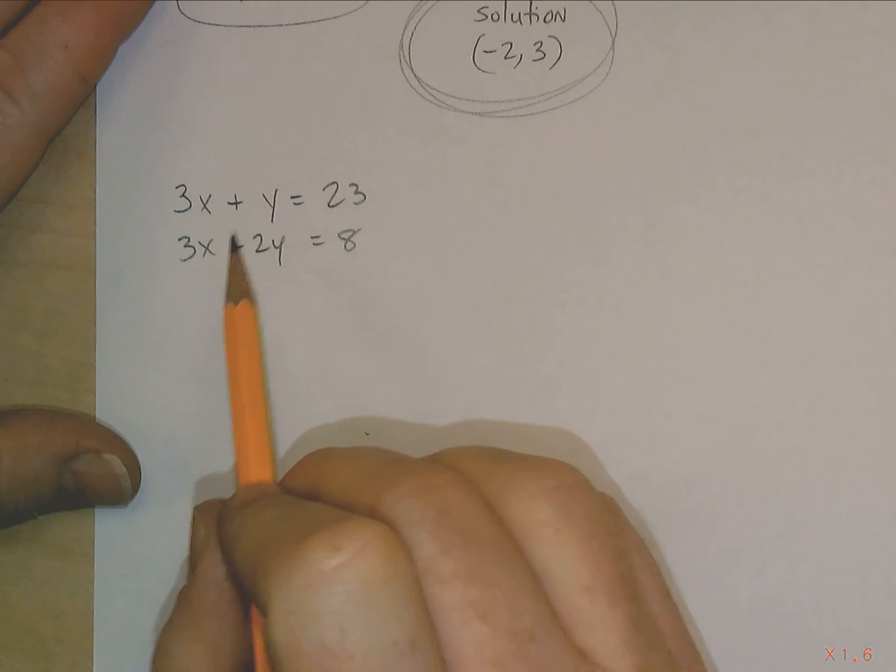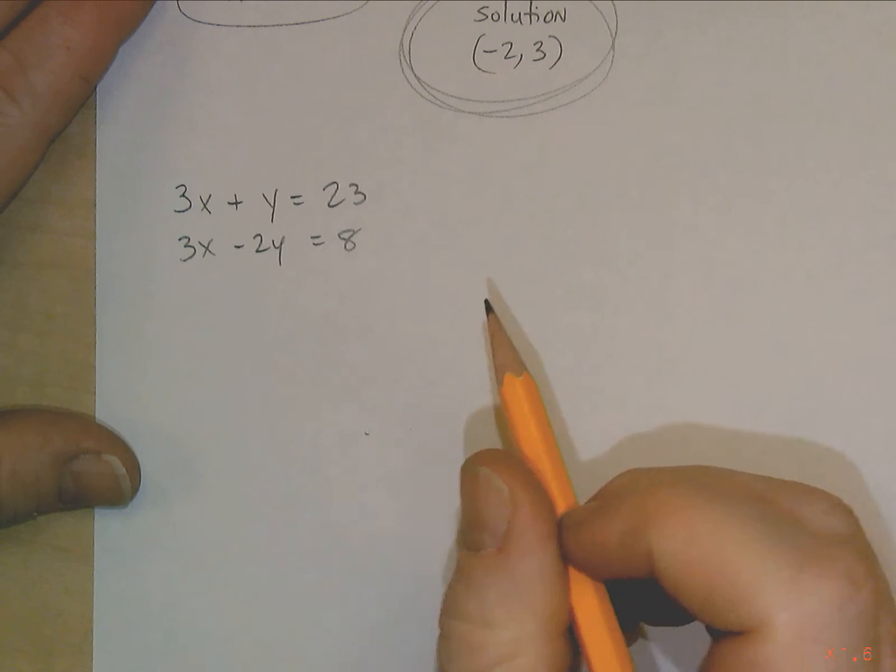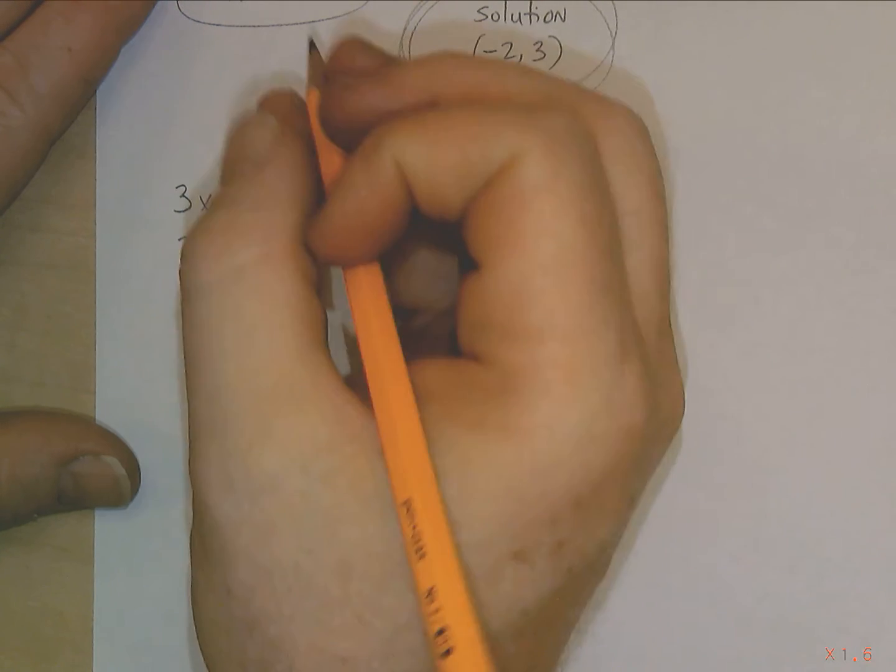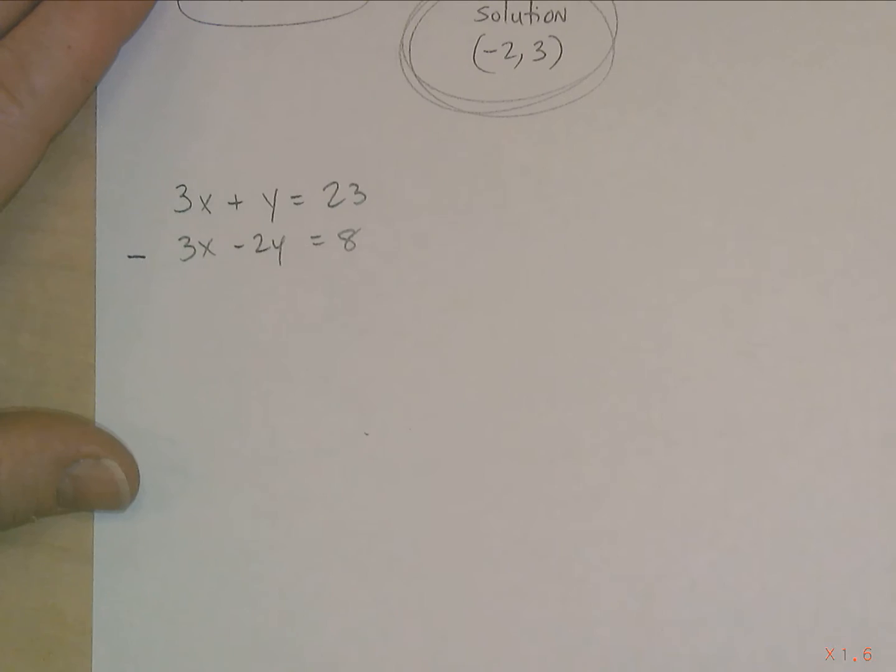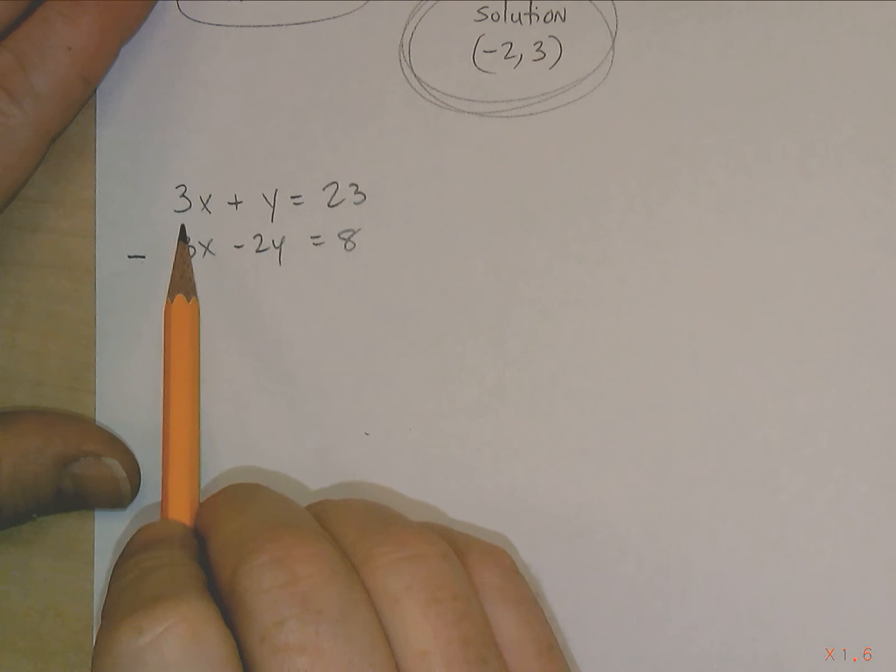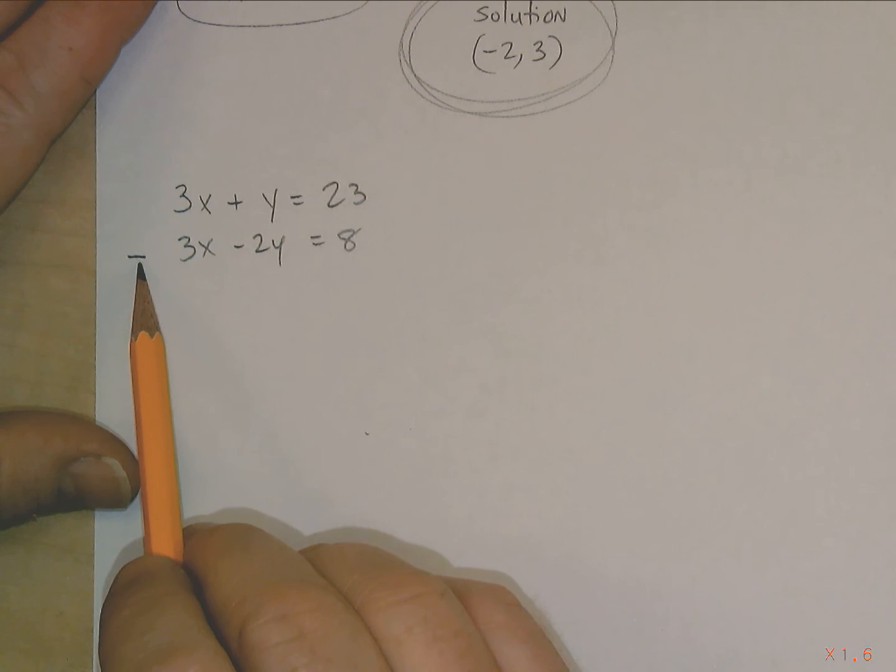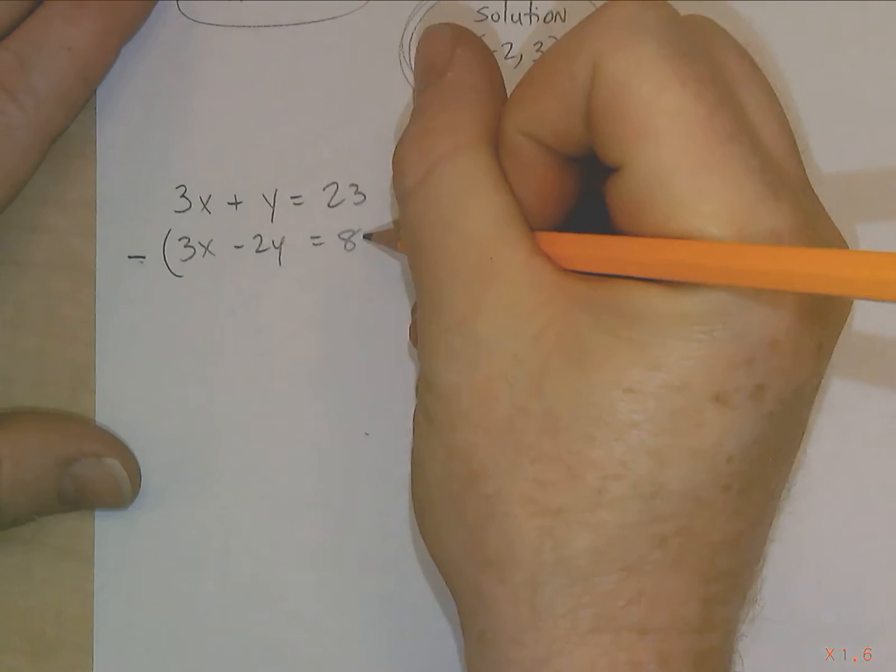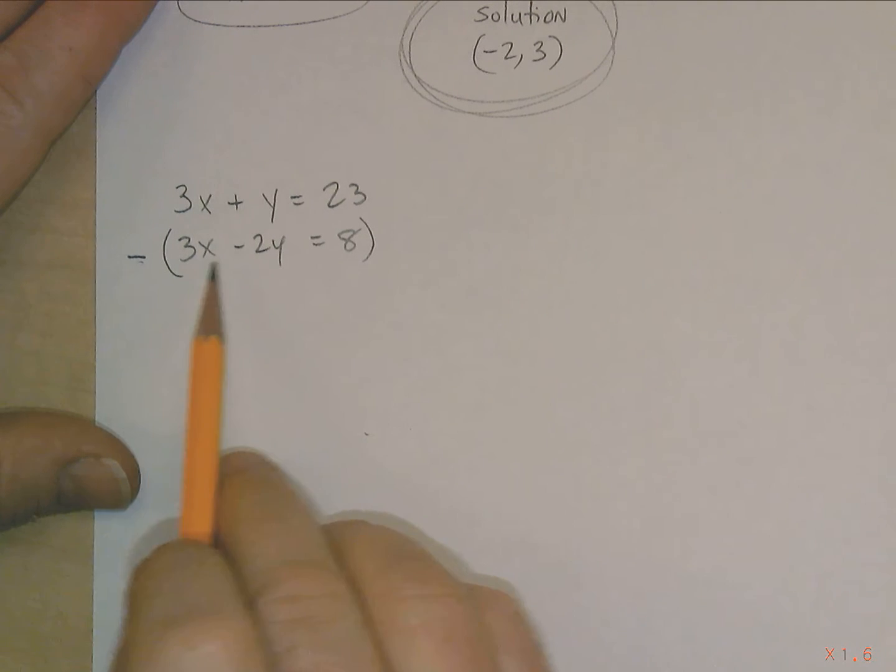So what you want to do is you want to subtract. We're not going to eliminate it by adding. We're going to eliminate it by subtracting. However, here's the kicker. If you subtract it, you can't just subtract the 3x. You have to subtract everything. Everything's got to be subtracted away from the top one. So what that means is that minus sign applies to everything inside of this parentheses.